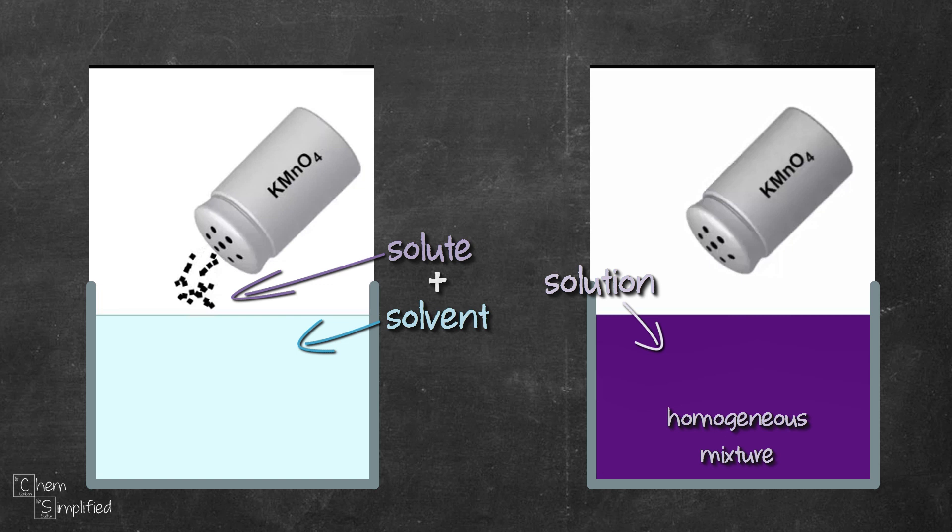Solute plus solvent together form a solution, which is the KMNO4 solution. So there we go, the three S's: solute, solvent, and solution.